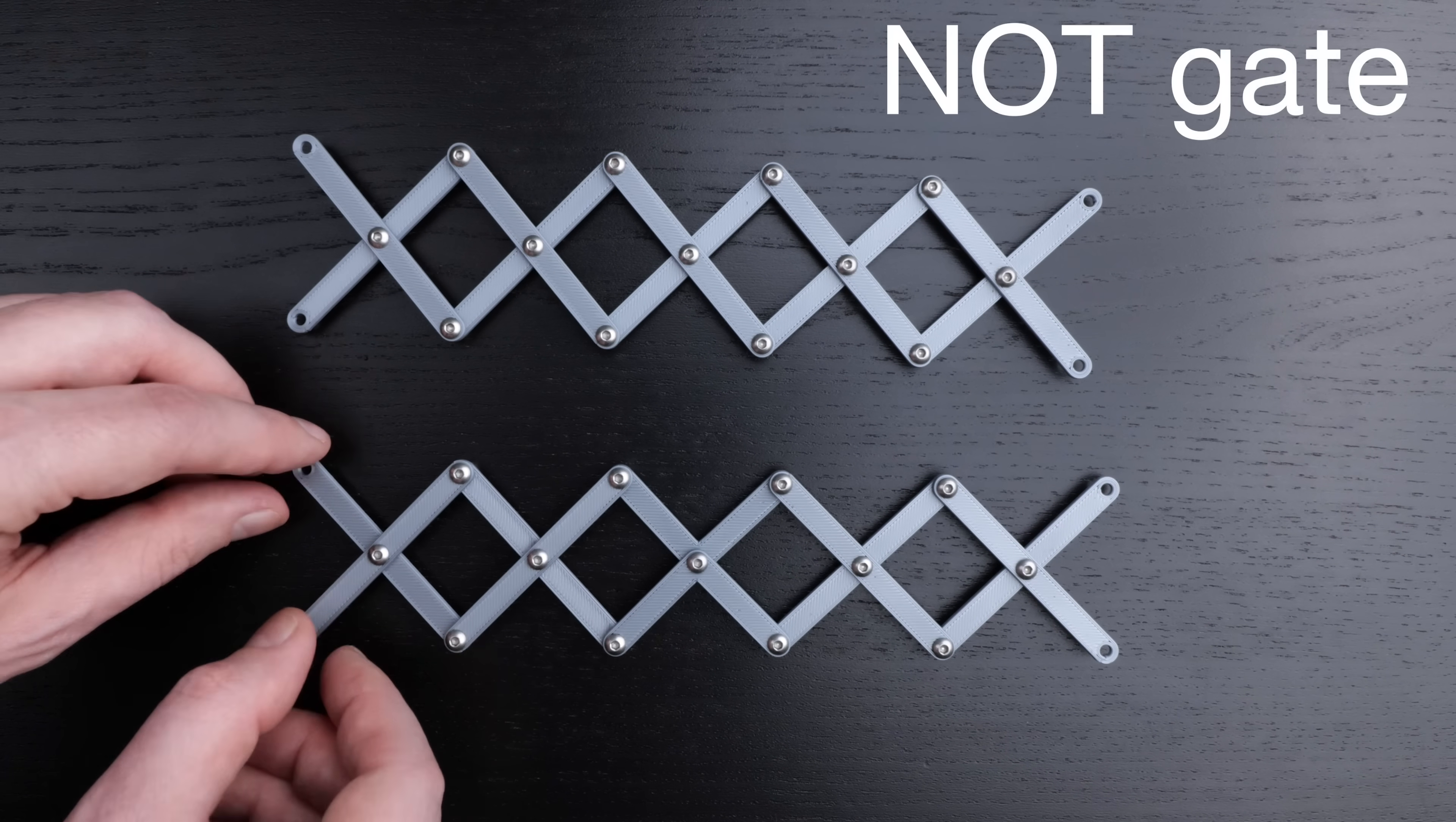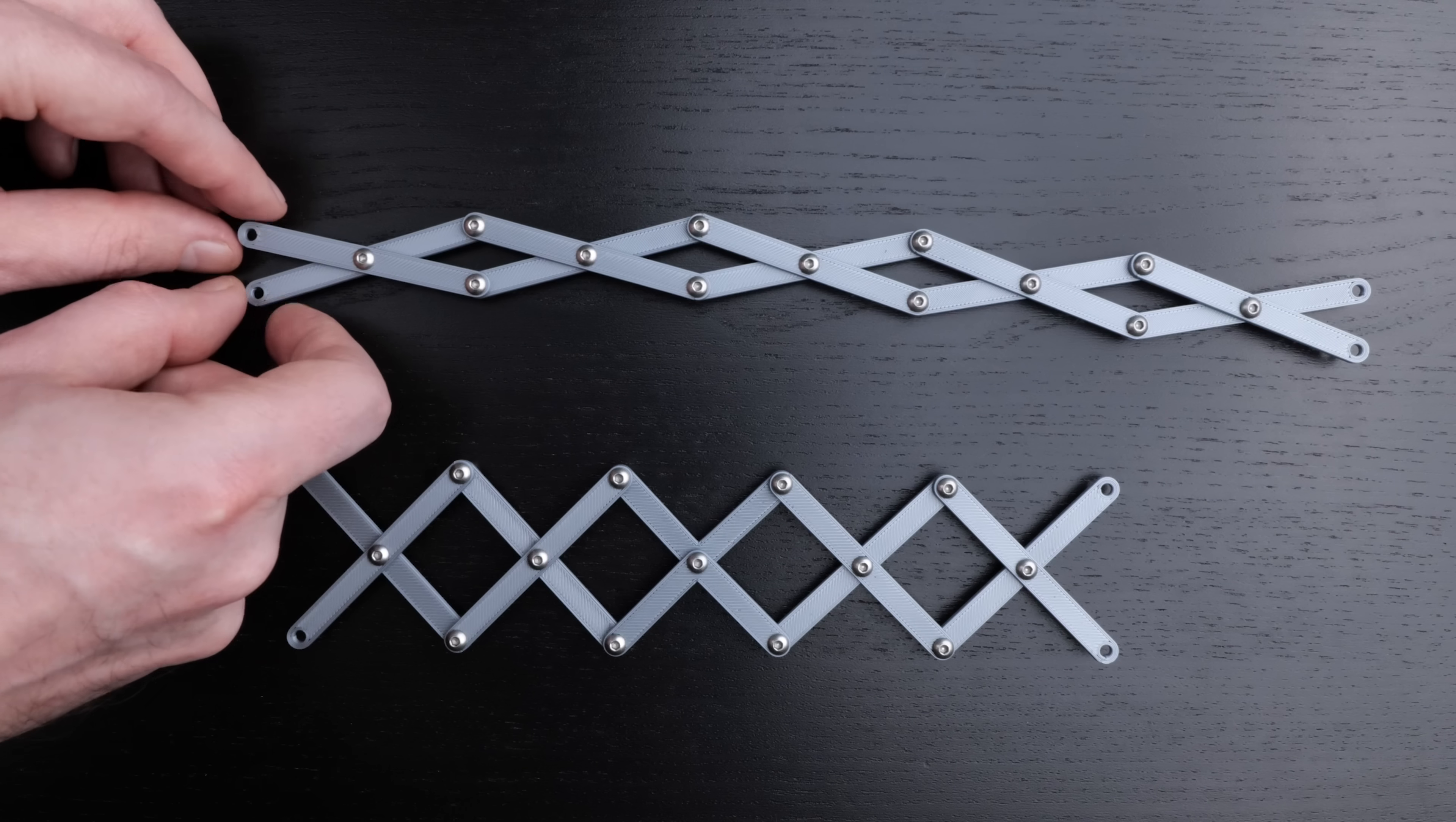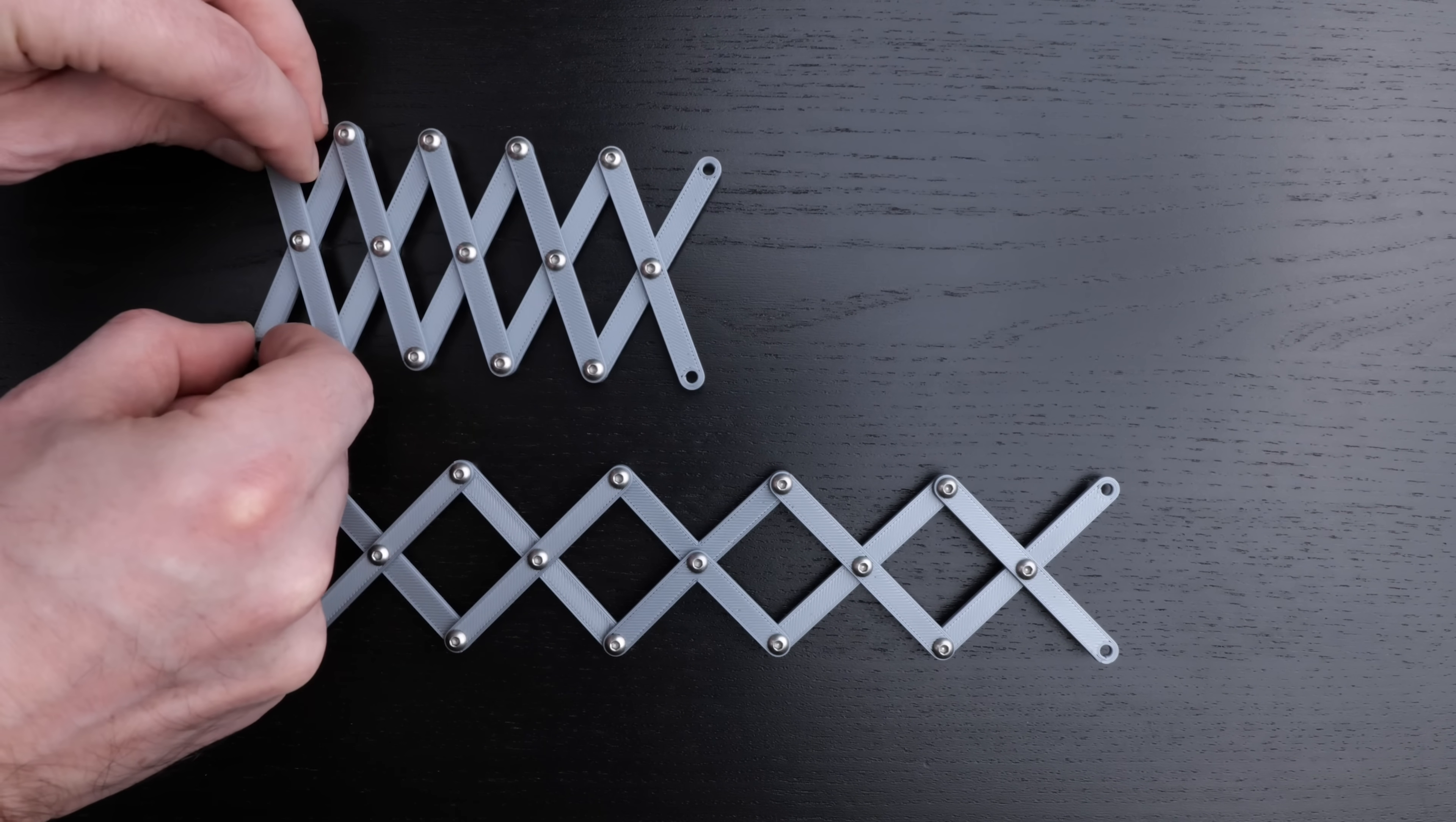So this is sort of like a NOT gate. It switches between the arms going close together and the arms going further apart. For example, you could say maybe you decide that when the arms are together, that means true. And so this is true on the left, true on the right, or false on the left, false on the right.